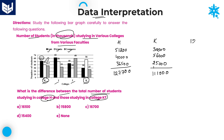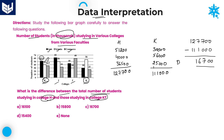Now we need to calculate the difference between those two: 1,27,700 minus 1,11,000. Two zeros are common. 7 minus 0 = 7; 7 minus 1 = 6; 2 minus 1 = 1. That gives 1,16,700. That is the required difference between the total number of students studying in college H and college K. Option C, 1,16,700, is the right answer.